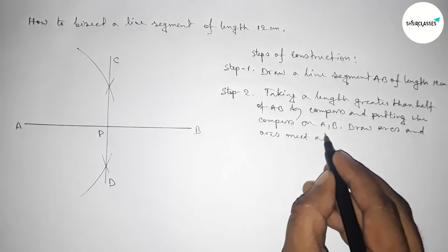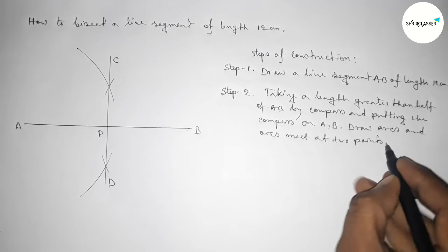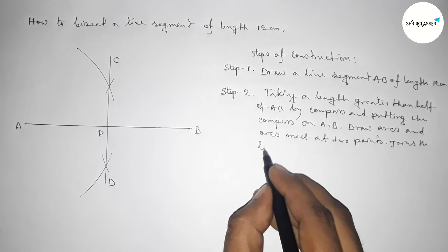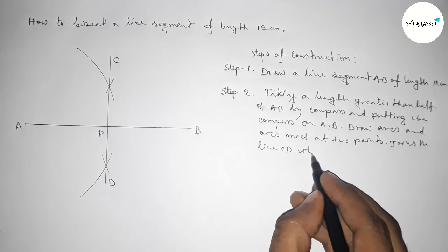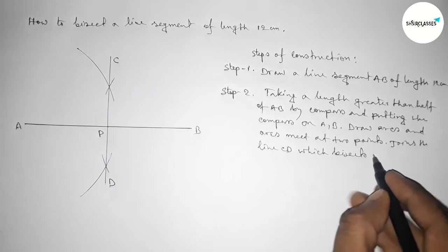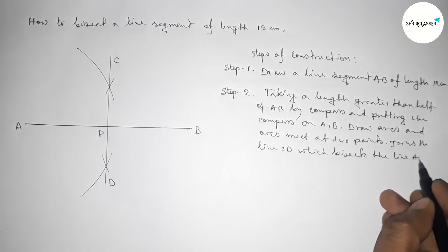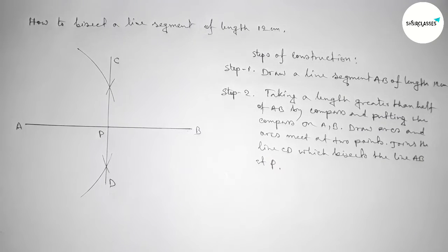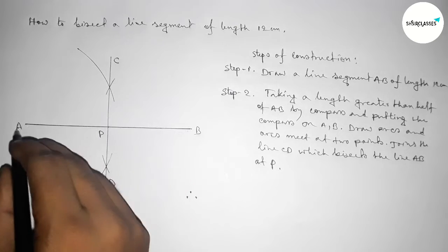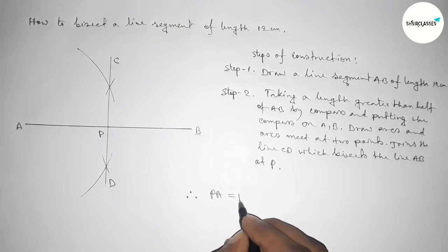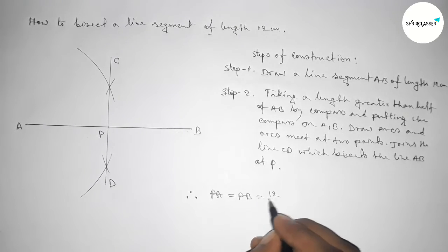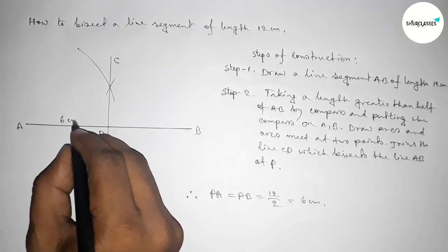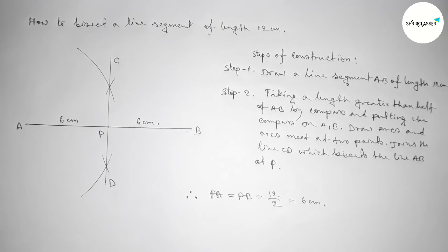Now join the line CD which bisects the line AB at point P. Therefore PA equals PB equals 12 divided by 2, which is 6 centimeters. So this is 6 centimeters, this is 6 centimeters. Now I'm going to check this.